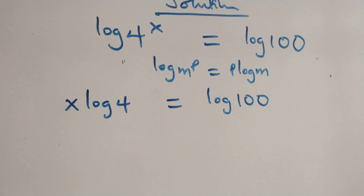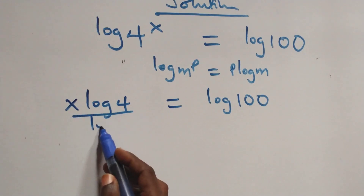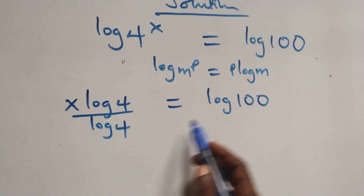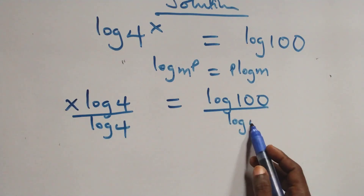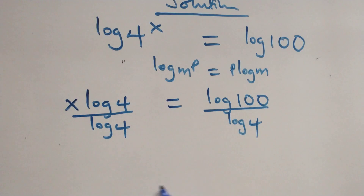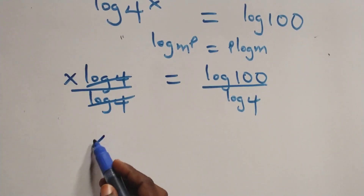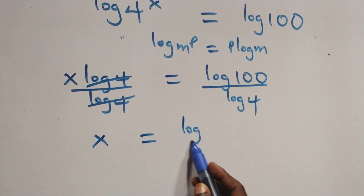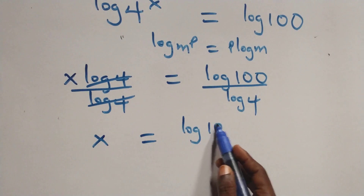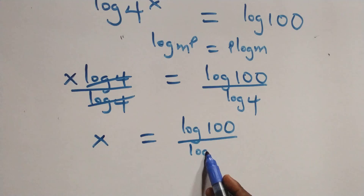Next step: divide both sides by log 4. We divide this side by log 4, and also divide this side by log 4. The log 4 terms cancel each other, and this becomes x equals log 100 over log 4.